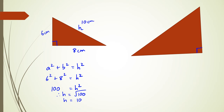One really important thing to notice: the hypotenuse is always the longest side in a right angle triangle. So if you get an answer for the hypotenuse that's less than 8, you know you've done something wrong in your calculation — it's always a good idea to go back and check.